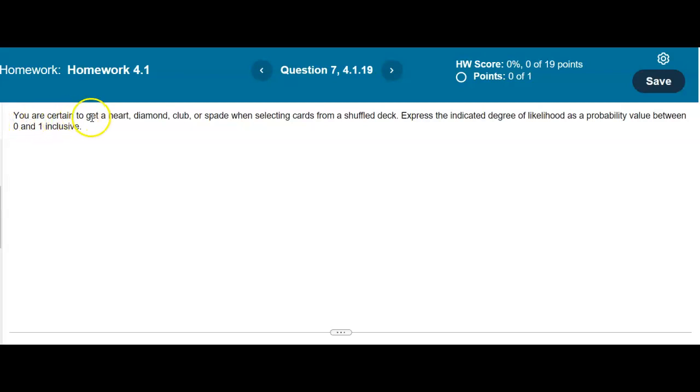You are certain to get a heart, diamond, club, or spade when selecting cards from a shuffled deck. Express the indicated degree of likelihood as a probability value between 0 and 1 inclusive.